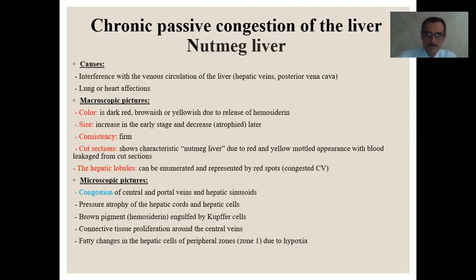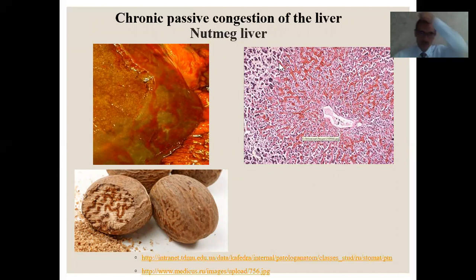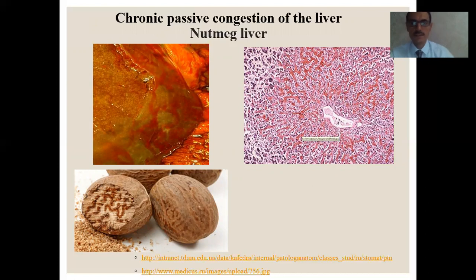Here you see the gross picture of the nutmeg liver — the cut section showing the nutmeg appearance. In the biopsy taken from the liver, we see the hepatic lobules. In Zone 1 of the hepatic lobules, we see the red color due to hyperemia, then color becomes green and brown due to the development of hemosiderin. Also in the liver there develops fatty degeneration due to hypoxia.